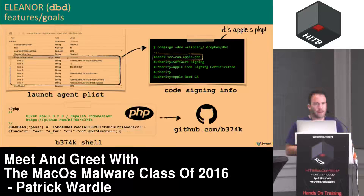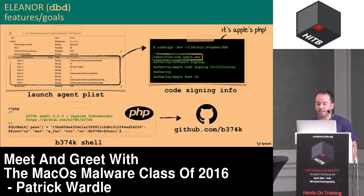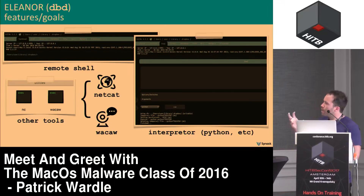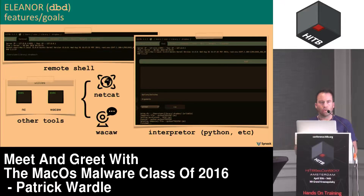The second launch agent runs a script called check_hostname that encrypts the name of the hidden Tor service and publishes it to pastebin, so the attacker can go to pastebin, grab the encrypted service name, decrypt it, and connect to the infected computer. The third launch agent executes a binary called dbd, which turns out to be Apple's signed copy of PHP, run with the -s argument to start a built-in web server. It serves an open source PHP shell providing complete remote control — remote shell, file explorer, script interpreter — plus utilities Netcat and Waka, which captures video off the webcam.